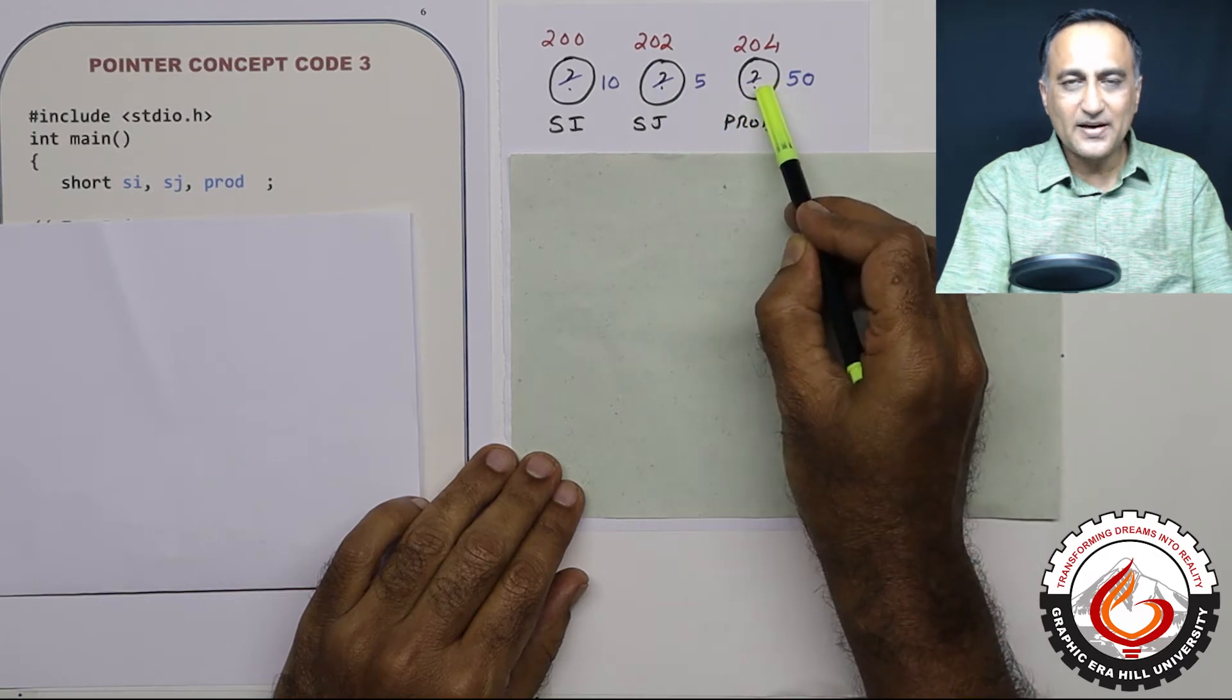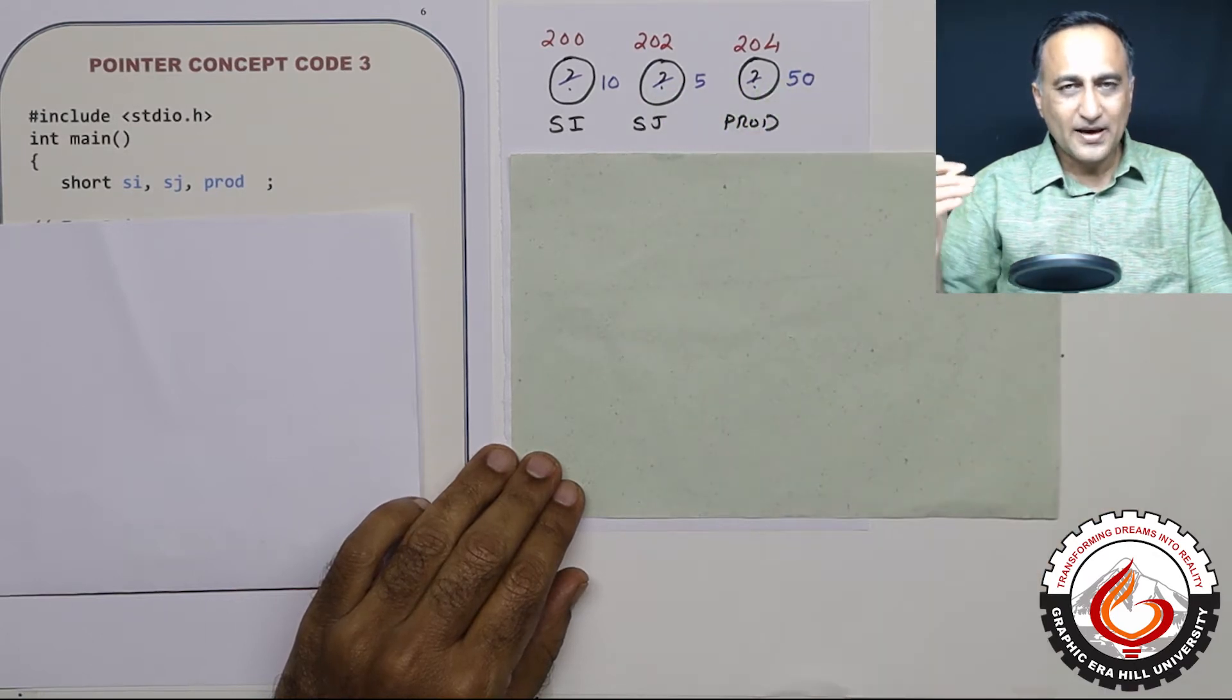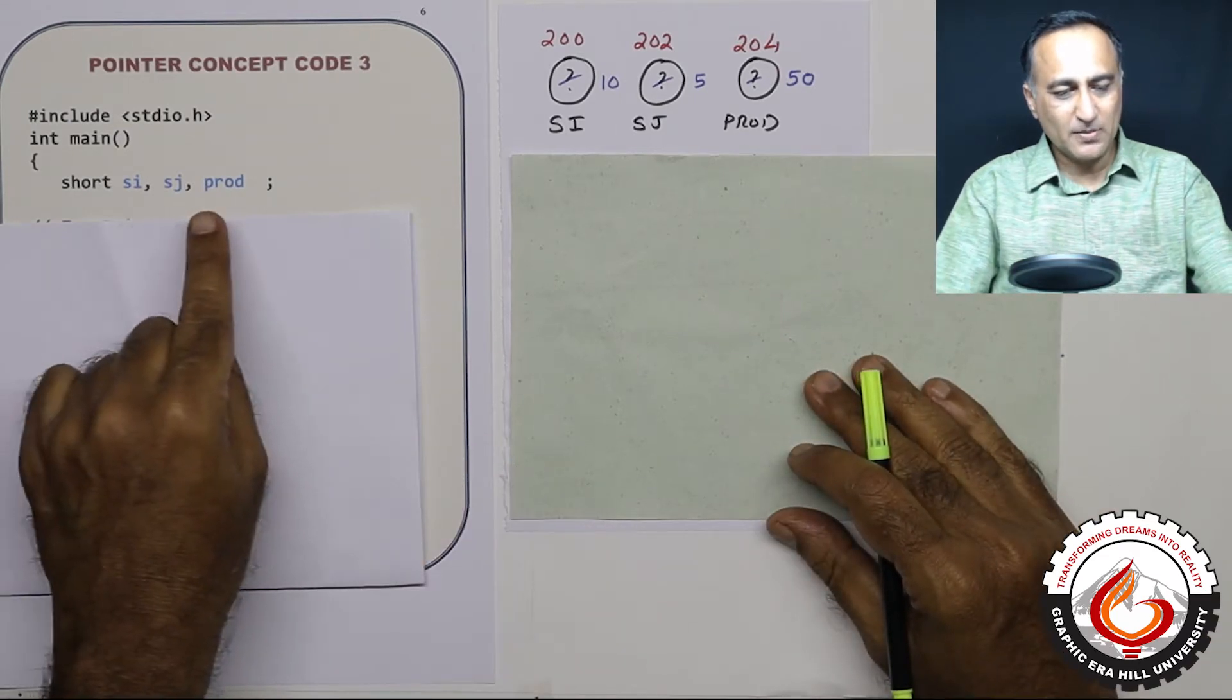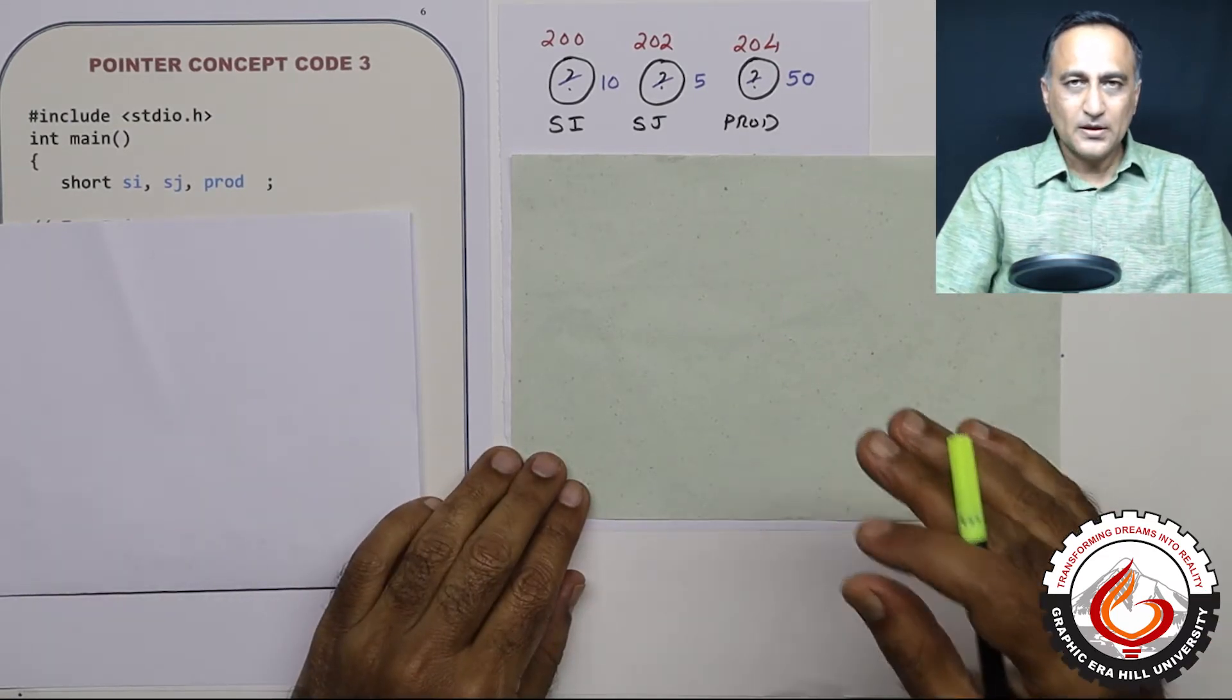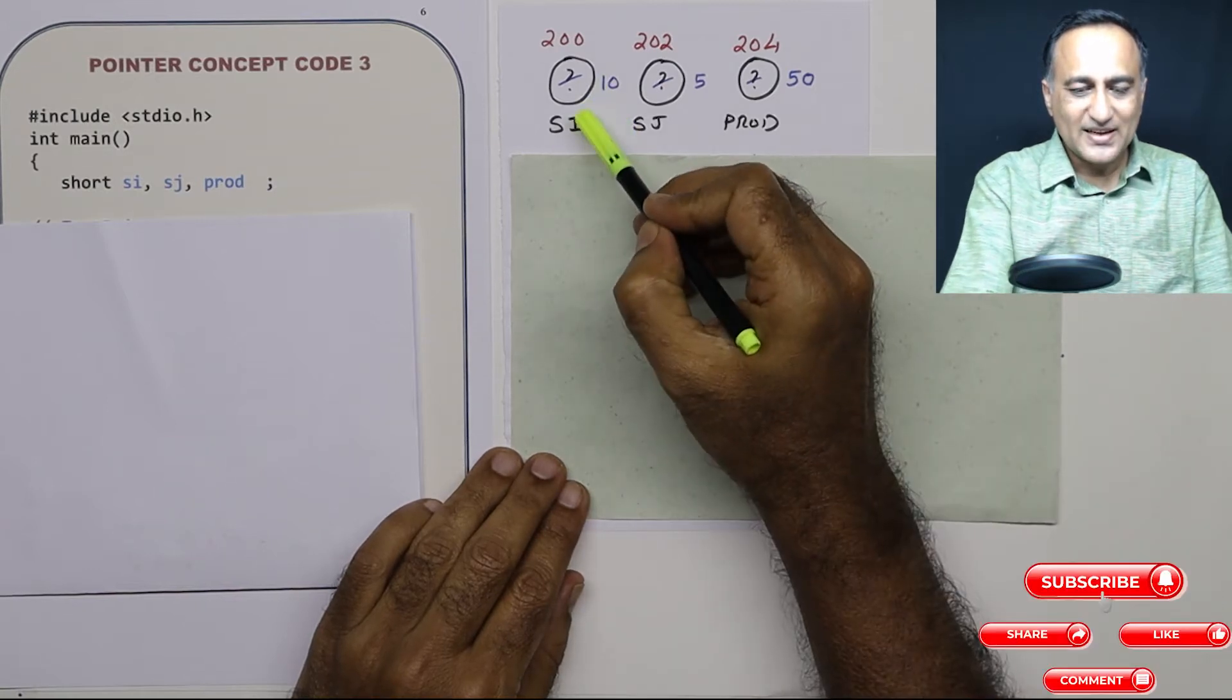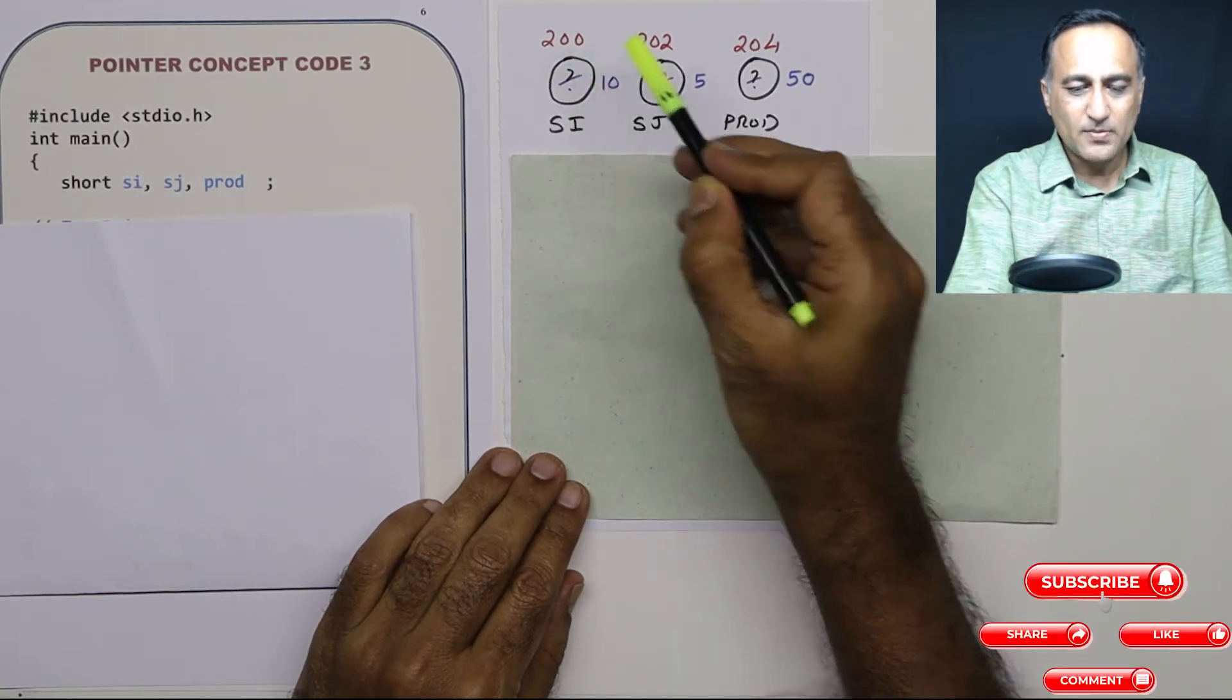The question marks indicate that they have random or garbage values initially because I have not given them any value. To further our understanding of pointers, we will say that si exists at address 200 in the memory.